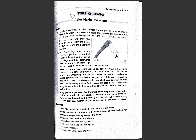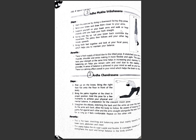The first asana is Adho Mukha Asana. The benefits include stretching of shoulders, legs, arms, feet, and spine. It provides immunity and body core strength, and gives an overall body stretch. It removes fatigue, regenerates the body, increases blood flow, strengthens the immune system, calms the mind, lifts the spirits, improves digestion, and strengthens the arms, legs, and feet.